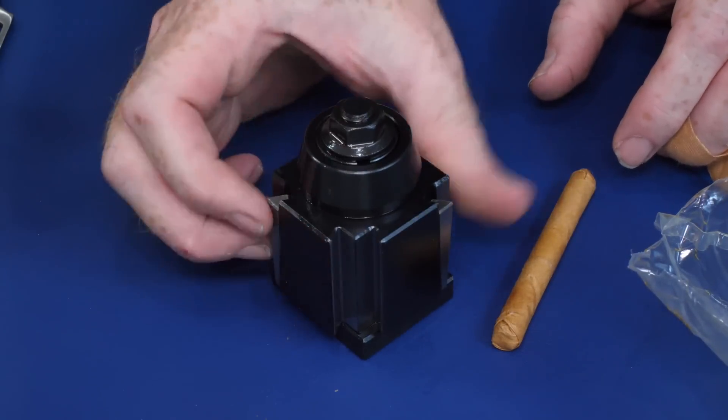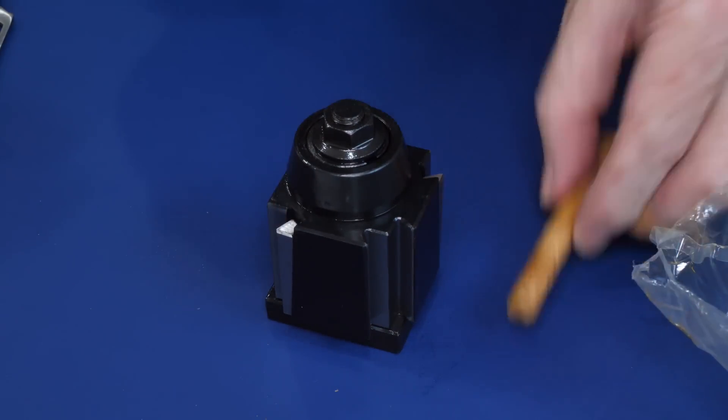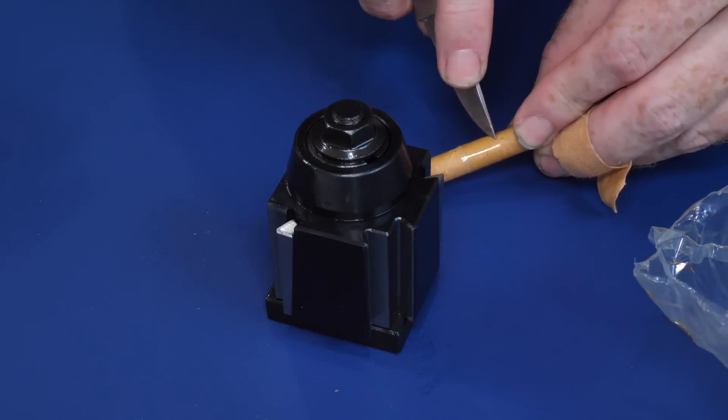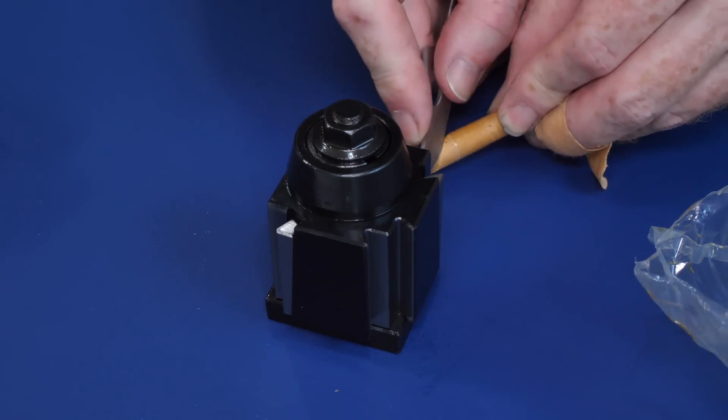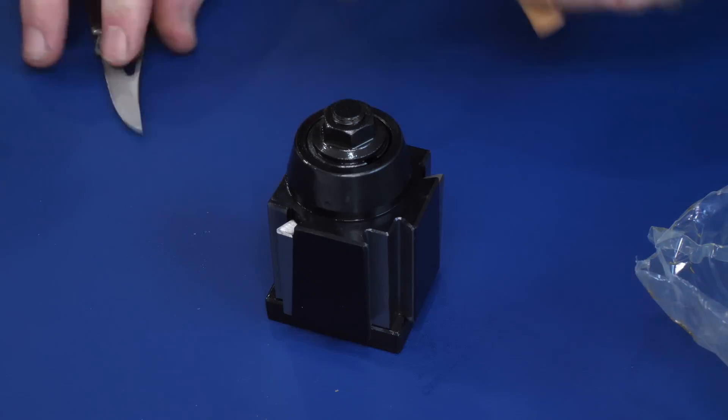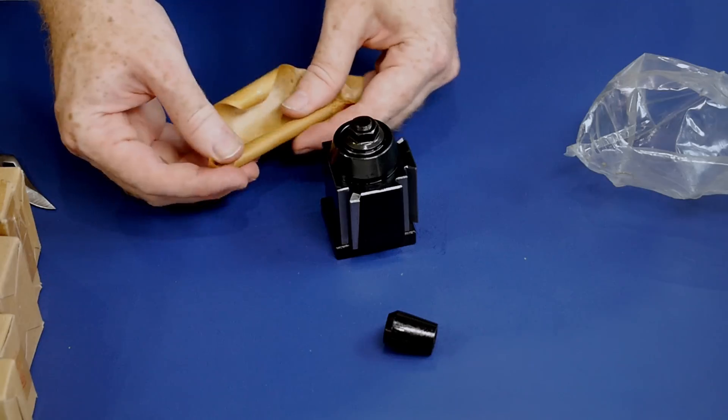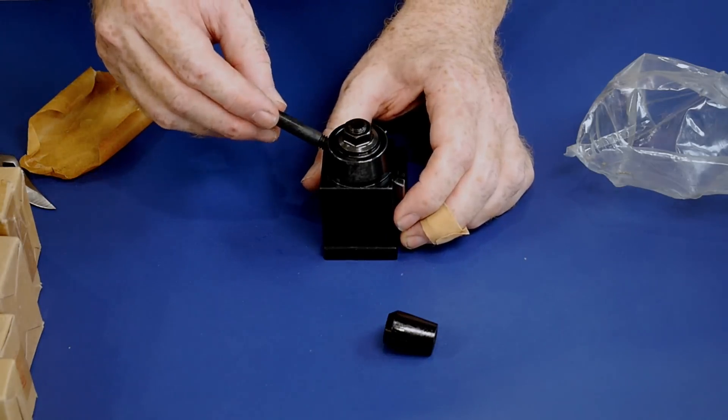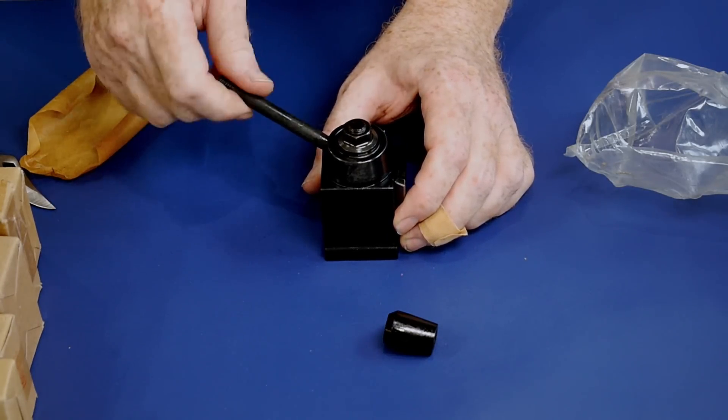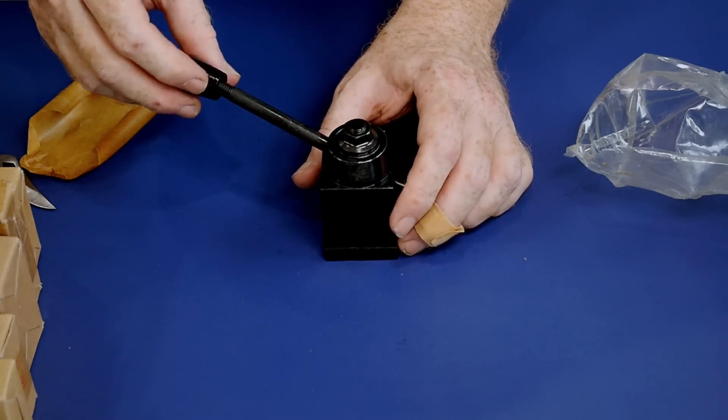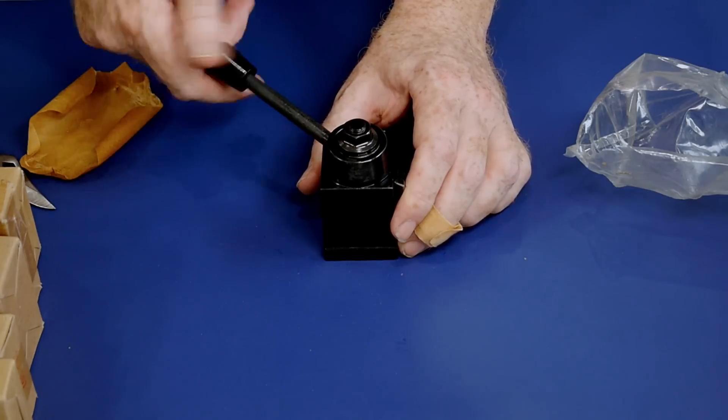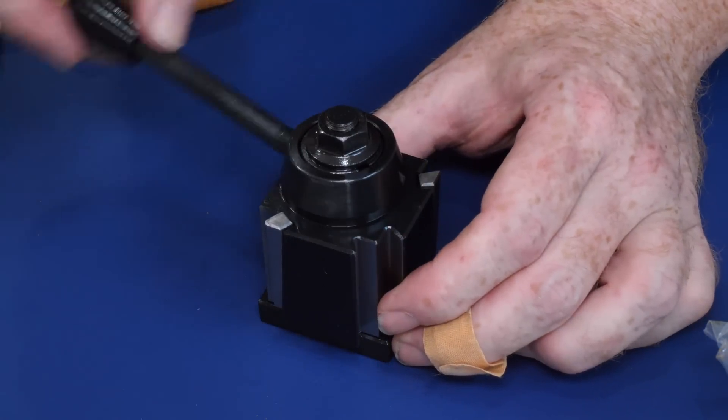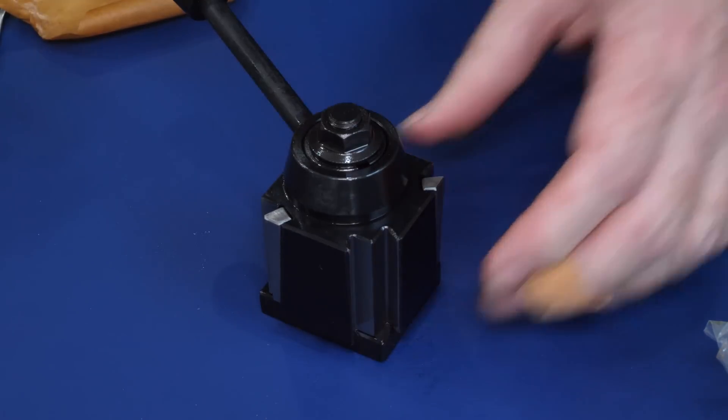The tool post is a Machifit branded Cuneiform Gib style quick change tool post. This is a tool post which allows you to switch tools very quickly, that uses a tapered gib to lock the tool holder into place. One of the most important features of a quick change tool post is that it ensures each tool is the correct height, or at least the same height that it was last time it was fitted. The gib is operated using this handle on top, which is able to tighten and loosen the two gibs, one on each usable face of the tool post.